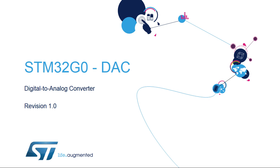Hello and welcome to this presentation of the STM32G0 Digital to Analog Converter. This block is used to convert digital signals to analog voltages which can interface with the external world.